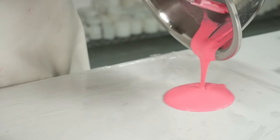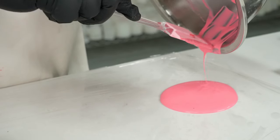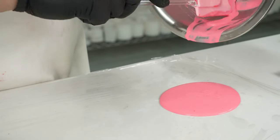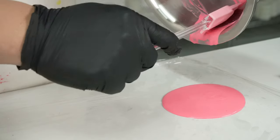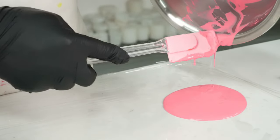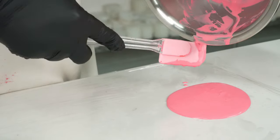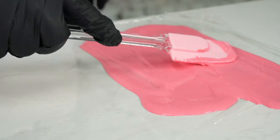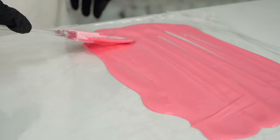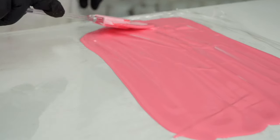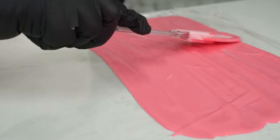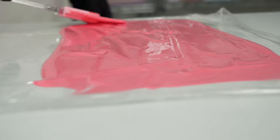First, slowly pour the stirred liquid onto the plastic wrap we prepared earlier. Make sure to pour it in a circular motion, starting from the center and moving outwards. This will help to spread the mixture evenly. Once the liquid is on the plastic wrap, use a stirring rod to gently spread it out. You want the mixture to be smooth and even, with no bumps or lumps. This will give your final piece a polished and professional look.